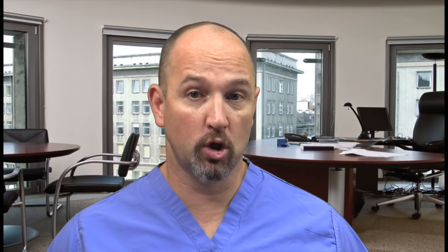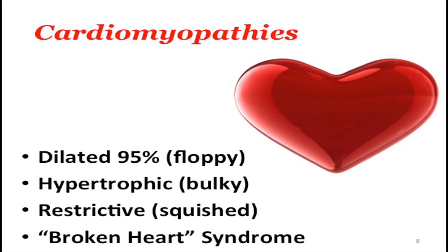Cardiomyopathies — think of four types of handshakes. A weak floppy handshake is dilated cardiomyopathy. A muscular bulky handshake is hypertrophic obstructive cardiomyopathy (HOCM). A squeezing hug is restrictive cardiomyopathy. And if someone gets scared, it's broken heart syndrome — we call that Takotsubo's cardiomyopathy. So there are four cardiomyopathies: dilated, hypertrophic obstructive, restrictive, and Takotsubo's.